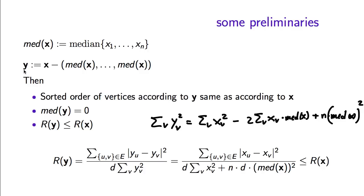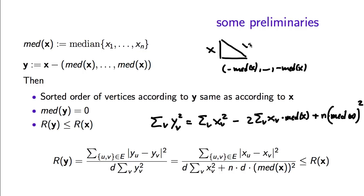Another way to see this: y equals x minus a vector that is orthogonal to x, since this subtracted vector is parallel to the all-ones vector, which is orthogonal to x. By the Pythagorean theorem, the squared length of x equals the squared length of y plus n times the median squared, confirming the denominator of R(y) is larger. It will be easier to work with y than x because the property that the median of y is 0 will be quite helpful.